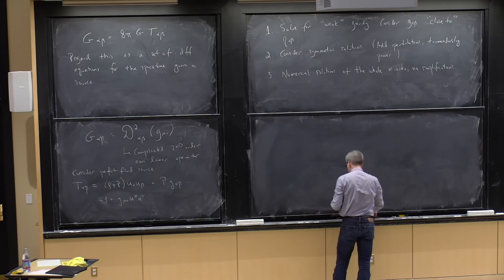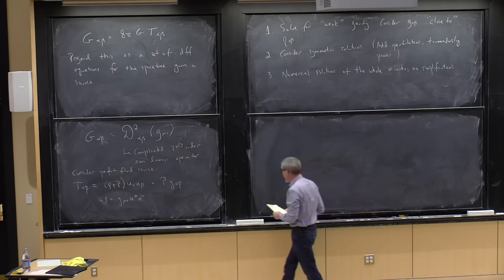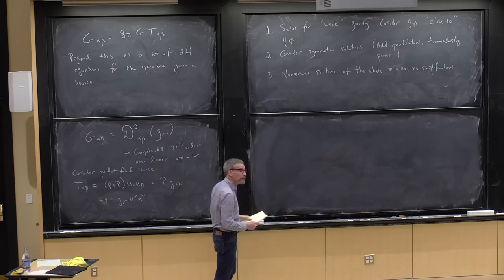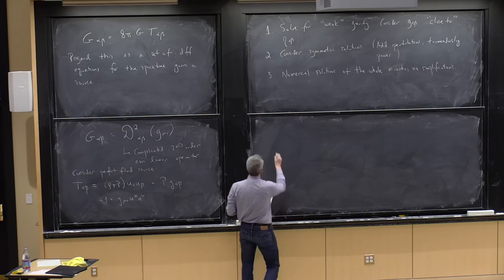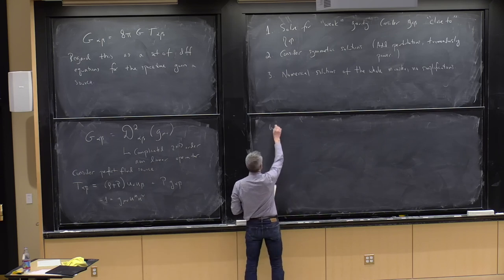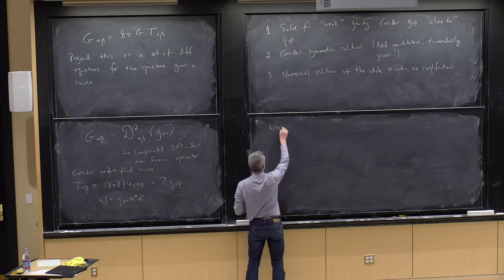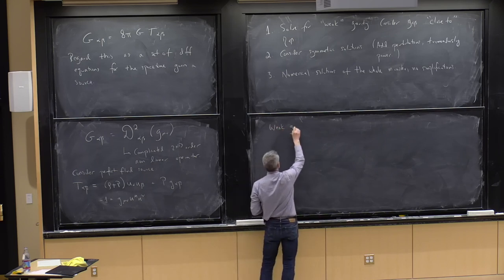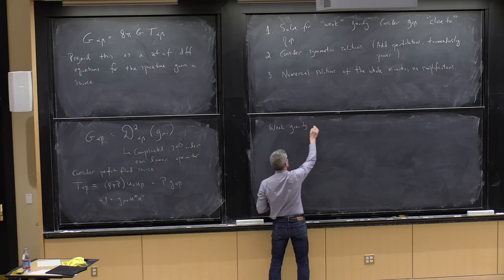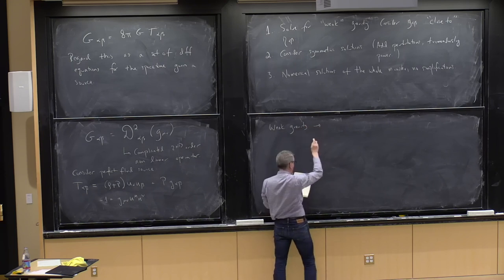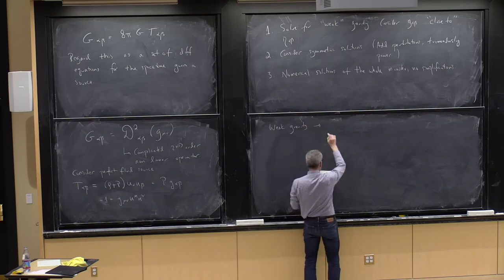So let's begin. We will start with choice one: weak gravity, also known as linearized general relativity.